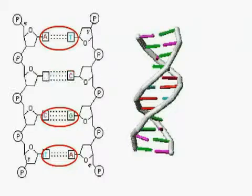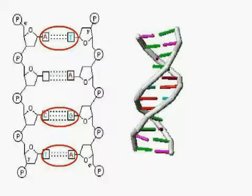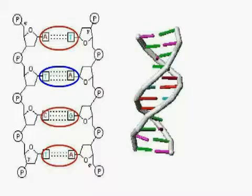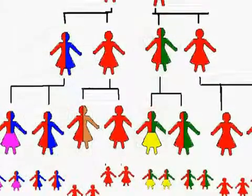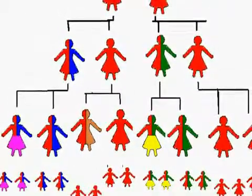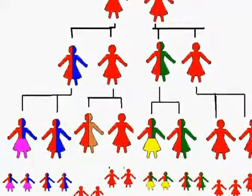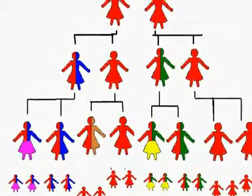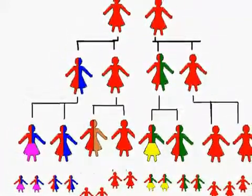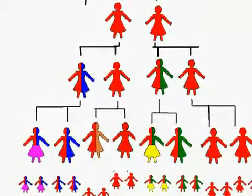When DNA copies itself, the copies aren't always perfect. Sometimes the wrong nucleotide will be put in place — in this case adenine instead of cytosine. If that isn't corrected, the pairing nucleotide will also be wrong. So you've got yourself a mutation, a marker. If the marker is on mitochondrial DNA, that marker will be passed down through every female descendant without alteration. If it's on Y chromosome DNA, it'll be passed down through every male descendant without alteration.